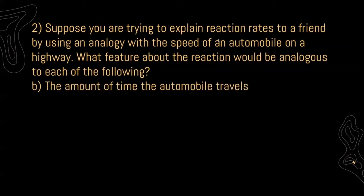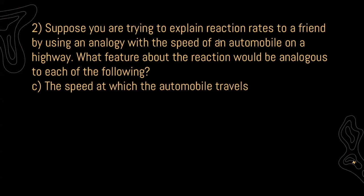For B, the amount of time the automobile travels — time with our car is the same as time in our reaction. It allows us to see how much product we're making or how much reactant we are using at a specific time. Lastly, the speed at which the automobile travels — speed is a rate. We're comparing distance traveled over time, and for us it would be concentration over time. Speed would be the same as our rate.